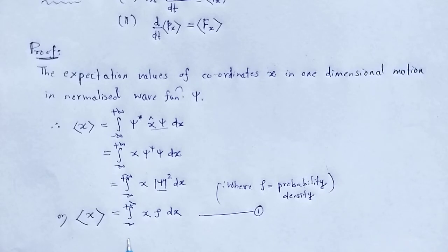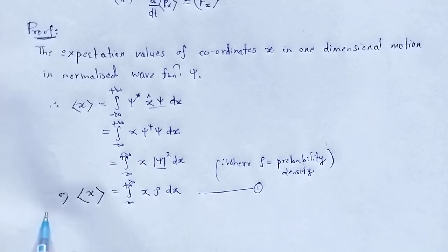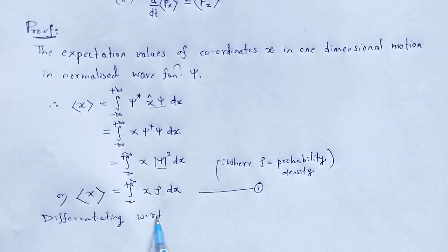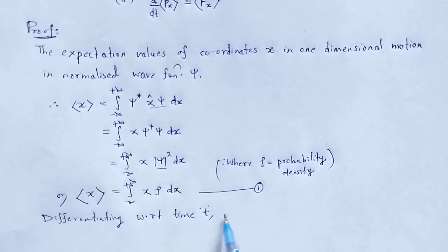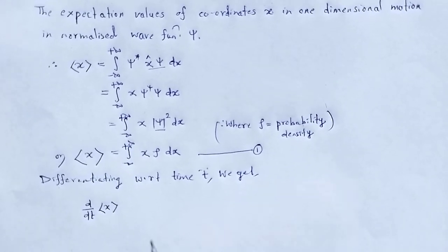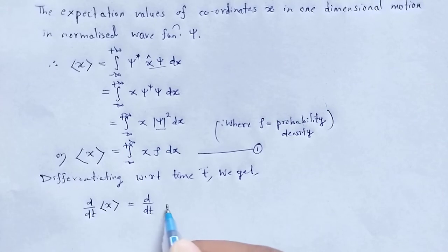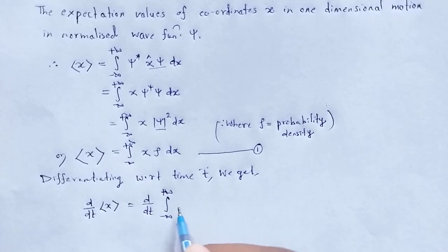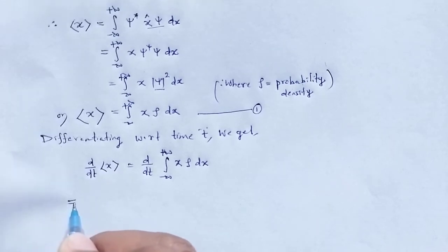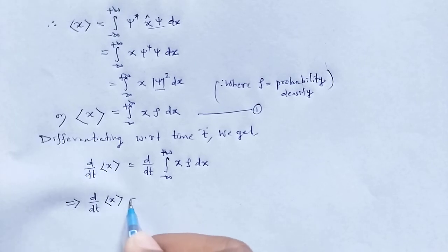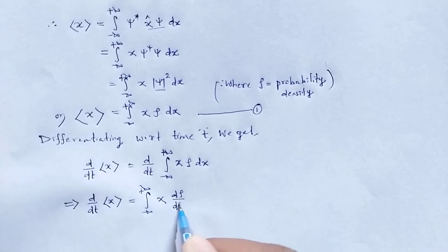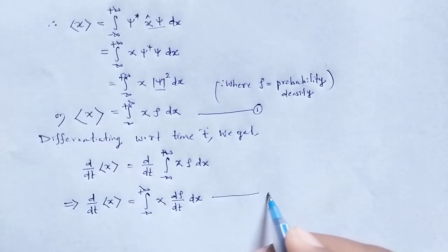Now, differentiating equation 1 with respect to time t, we get: d/dt of the expectation of x equals the integral from minus infinity to plus infinity of x times (d rho/dt) dx. This is equation number 2.